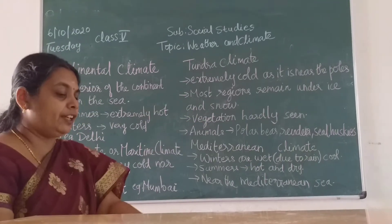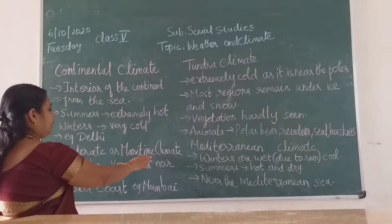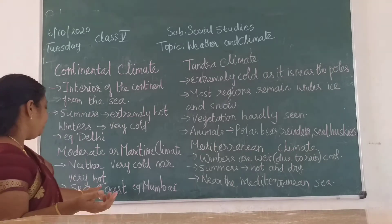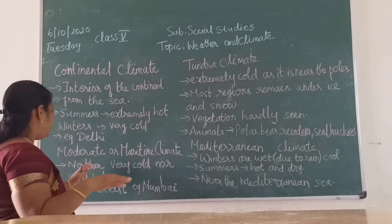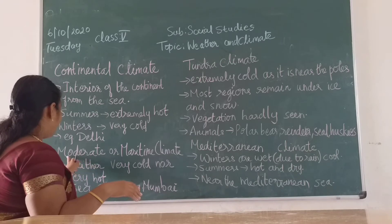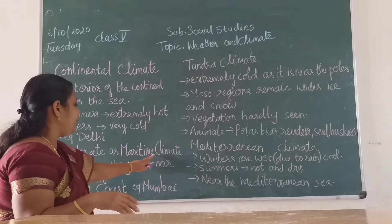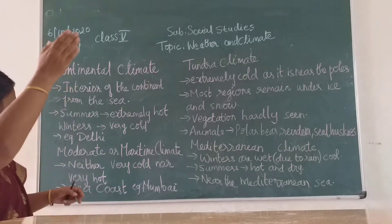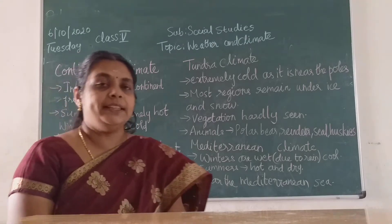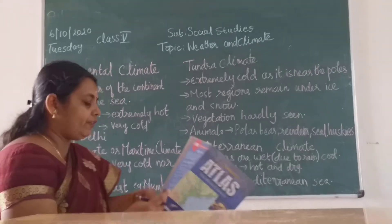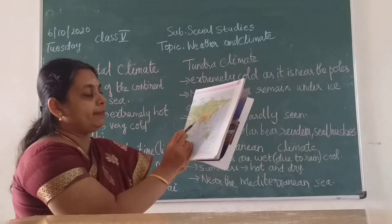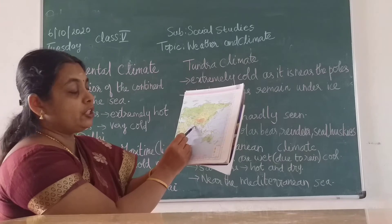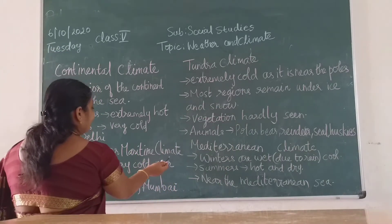The next climate we are going to see is moderate or maritime climate. It is neither very cold nor very hot. It is mainly observed near the sea coast. That is why it is named moderate or maritime climate. For example, Mumbai is near the Arabian Sea coast and so Mumbai has a maritime climate.